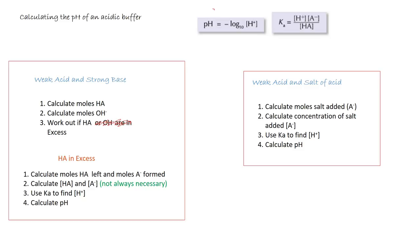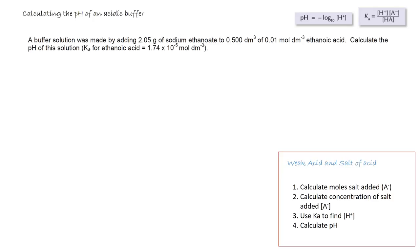We are going to look at how we use this second method to calculate the pH of the acidic buffer. Let's calculate the pH of an acidic buffer using the weak acid and the salt of the acid method. A buffer solution was made by adding 2.05 grams of sodium ethanoate to 0.5 dm³ of 0.01 mol dm⁻³ ethanoic acid. Calculate the pH of the solution — we are given a Ka value.